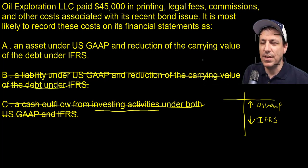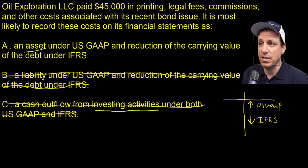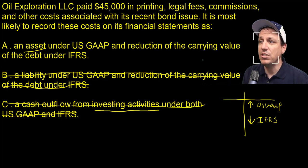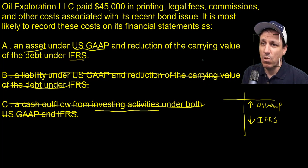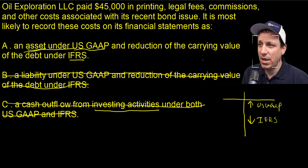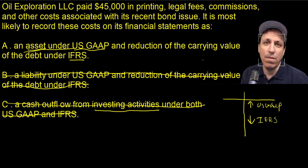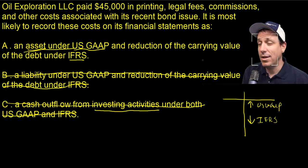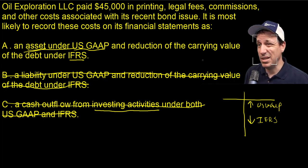So the answer is: under US GAAP, an asset is recorded — those expenses are capitalized — and under IFRS, a reduction of the carrying amount of the debt is recorded. So under US GAAP we record an asset, and under IFRS they reduce the carrying amount that those bonds are held at. It's one of these difficult ones where you have to kind of know the answer, but you can also back into it by eliminating the other options.